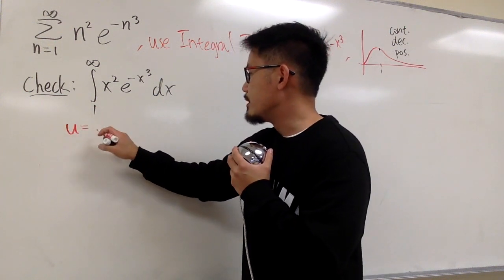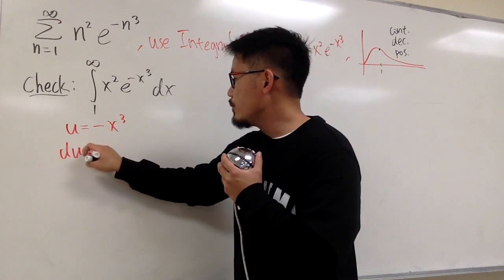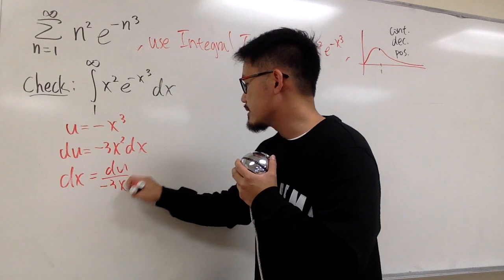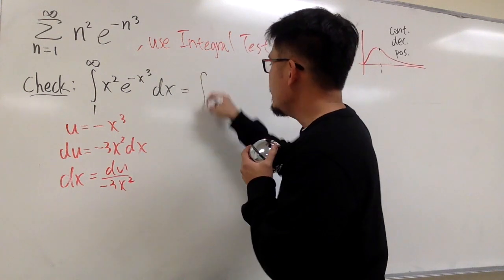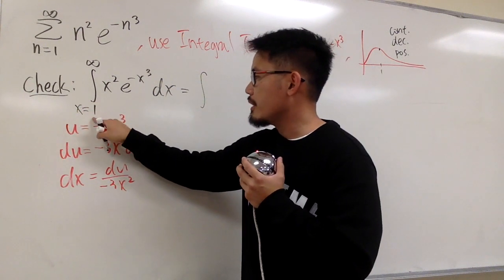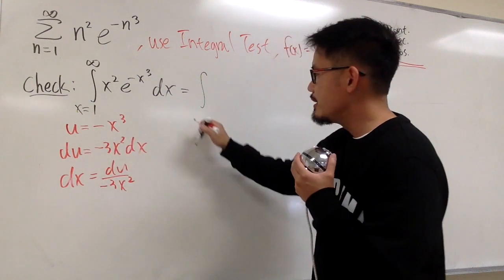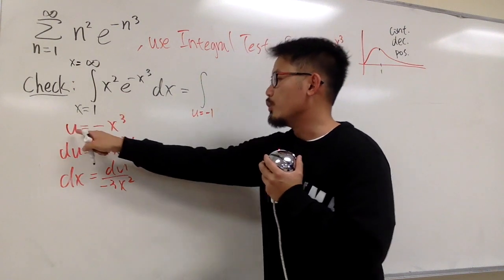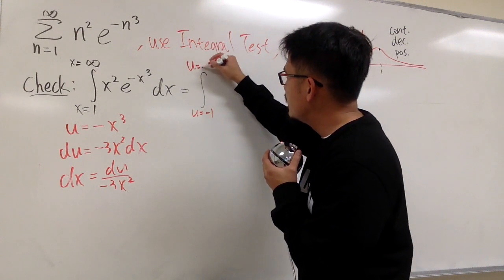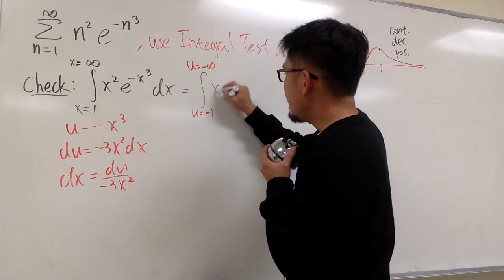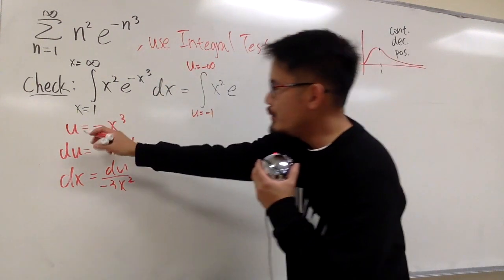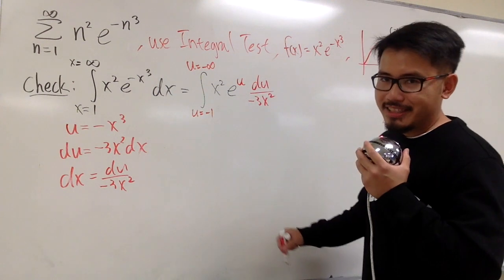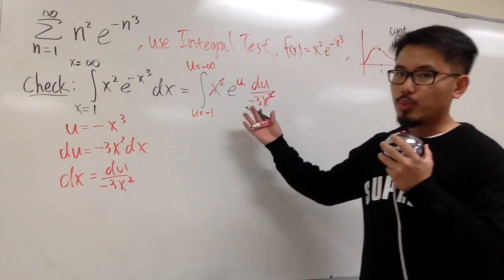We will integrate this using u-substitution. Let u equal the inner function, which is negative x to the third power, so du = negative 3x squared dx, giving dx = du over negative 3x squared. Converting to the u world: when x = 1, u = negative 1 to the third power = negative 1; when x = infinity, u = negative infinity. The x squared terms cancel with the x squared in the denominator of dx, leaving us working entirely in the u world.